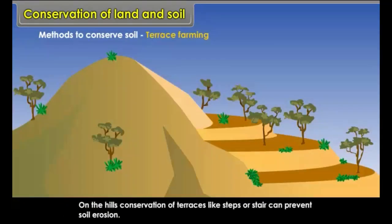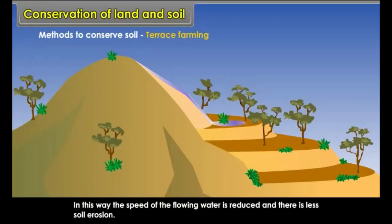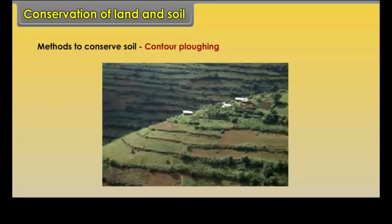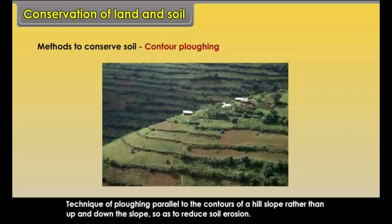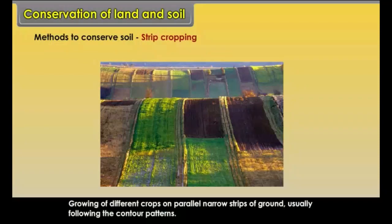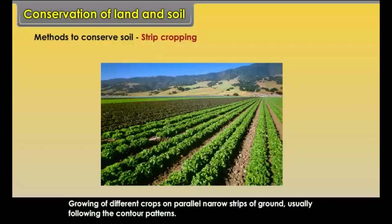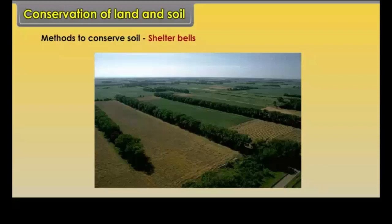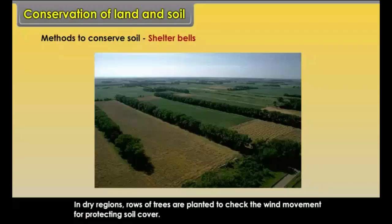Terrace farming — on the hills, construction of terraces like steps or stairs can prevent soil erosion, reducing the speed of flowing water and lessening soil erosion. Contour ploughing — technique of ploughing parallel to the contours of a hill slope rather than up and down the slope, so as to reduce soil erosion. Strip cropping — growing of different crops on parallel narrow strips of ground, usually following the contour patterns. Shelter belts — in dry regions, rows of trees are planted to check wind movement and protect soil cover.